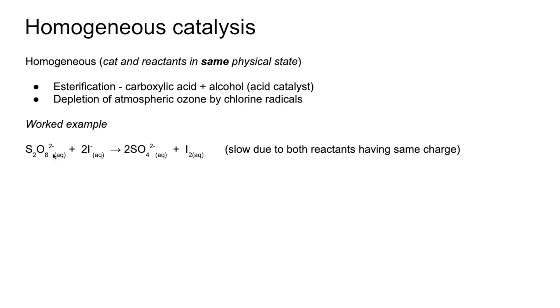So this reaction is slow because both of the reactants are negatively charged. We can use a mixture of iron 2 plus iron 3 plus aqueous ions to catalyse the reaction. And what's happening is iron is using its ability to change its oxidation state. Remember that's a property of a transition element. And that's going to help catalyse this reaction.